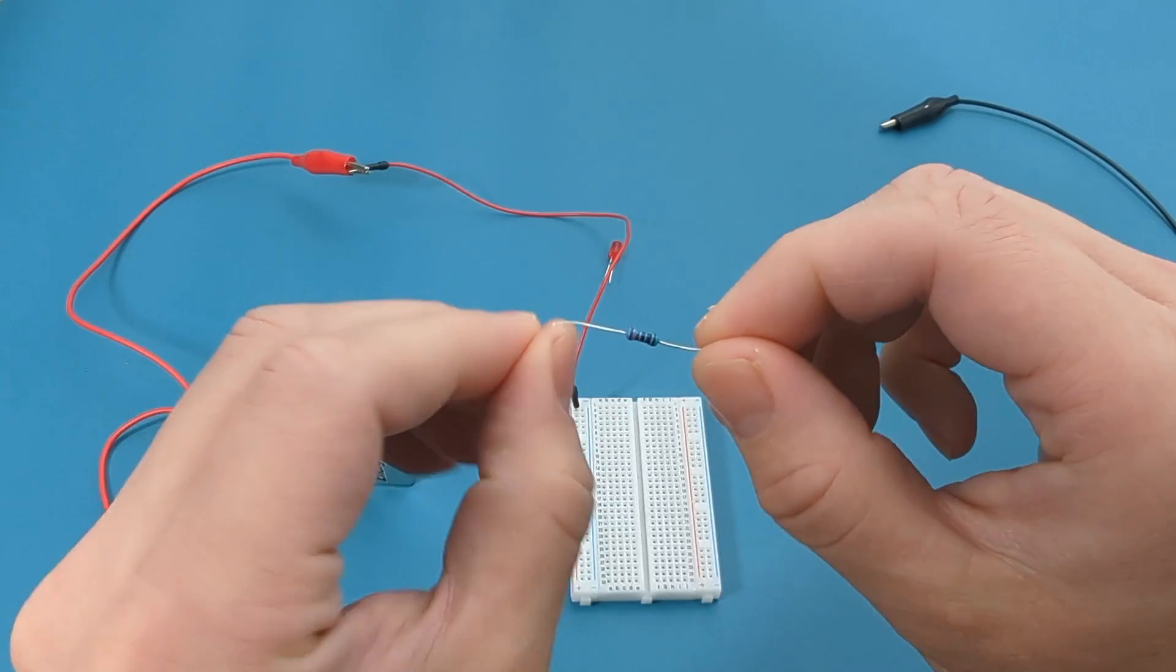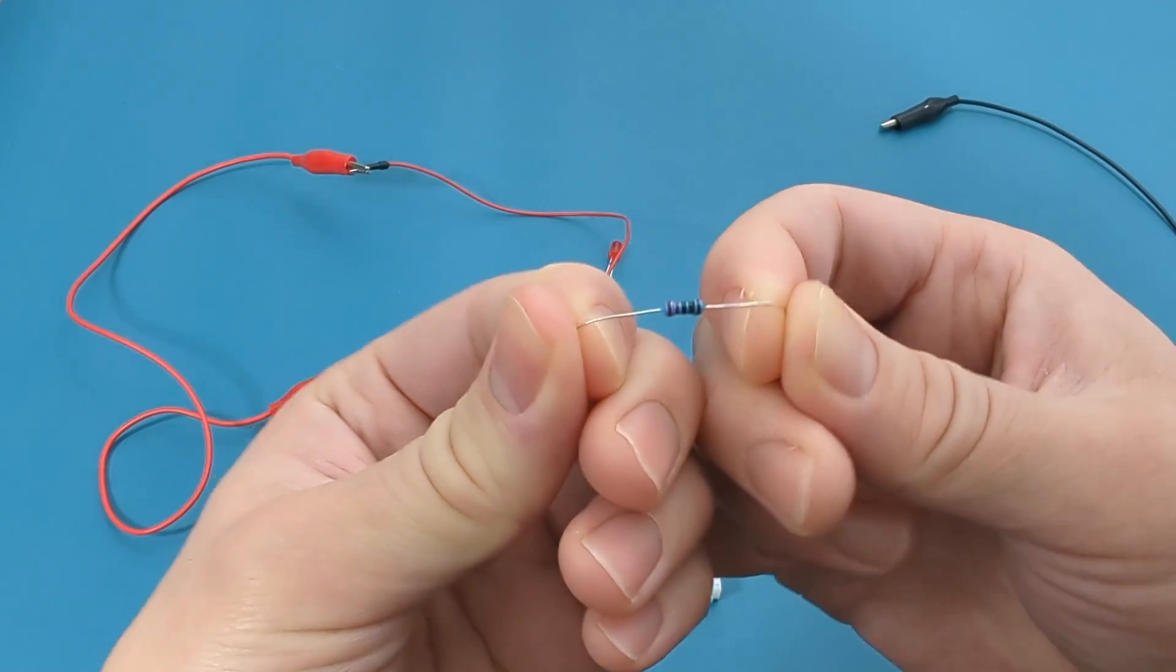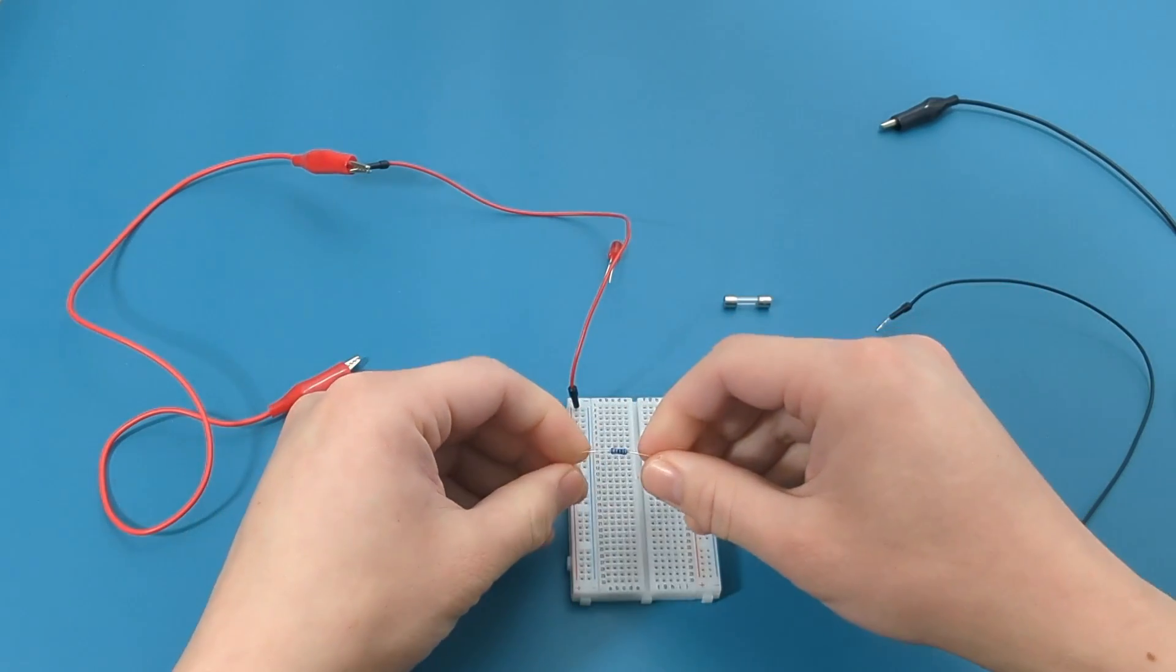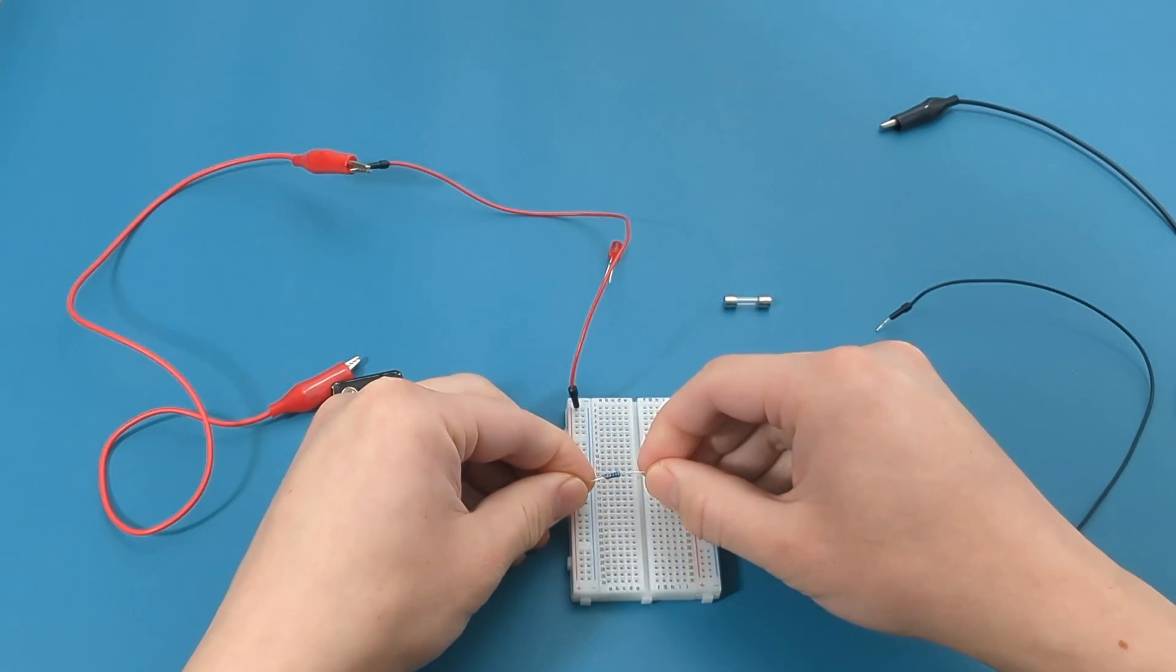Bend the wire ends of the resistor so they can be inserted into the breadboard. Insert one end of the resistor to the column on the positive end and attach the other end to the middle column.